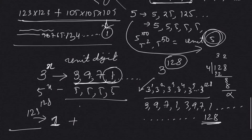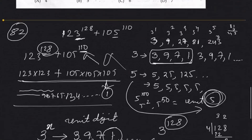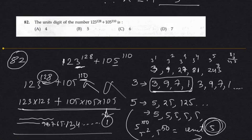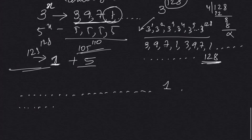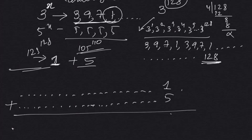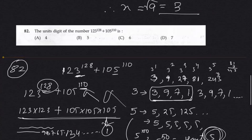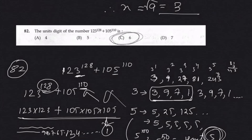For the number with power 105 and 110, the unit digit of 5 is always 5. So adding unit digit 1 from the first number and unit digit 5 from the second number gives 6. The answer is C, that is 6. For similar questions in further exams, we should be able to solve this.